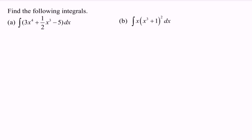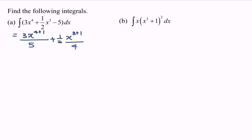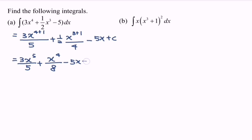Integrate the situation and we will have 3 multiplied with x to the power of 4, plus 1 over 2 multiplied with x to the power of 3, plus 1 over 4, minus 5x, plus c. Rewrite the situation: 3 multiplied with x to the power of 5 over 5, plus x to the power of 4 over 8, minus 5x, plus c.